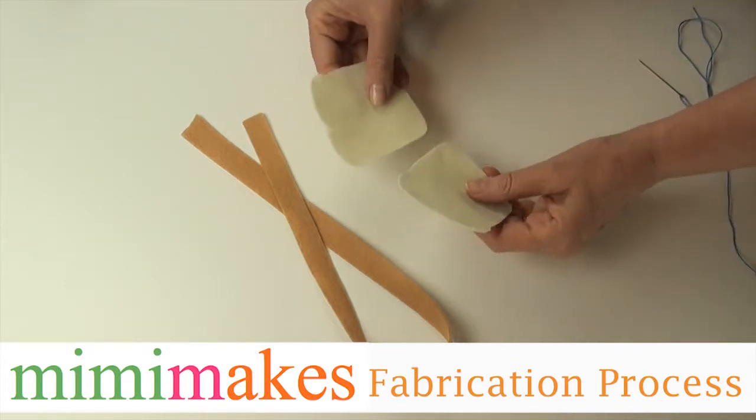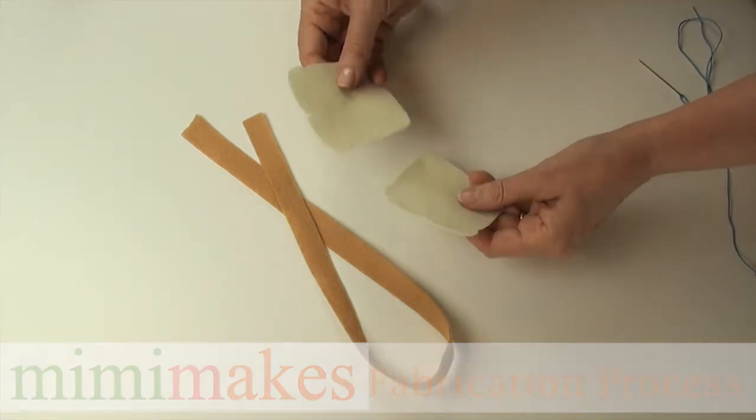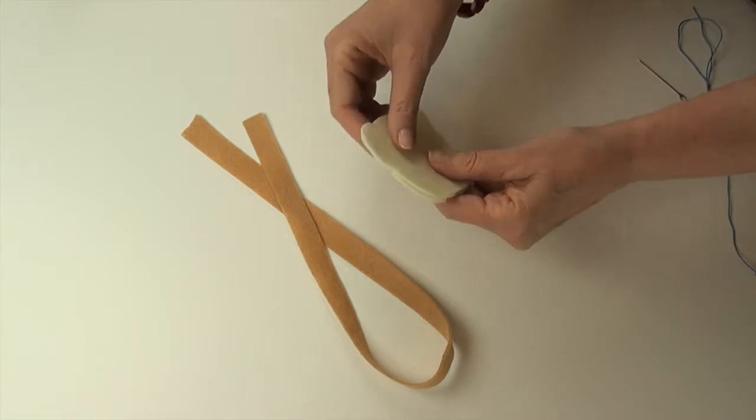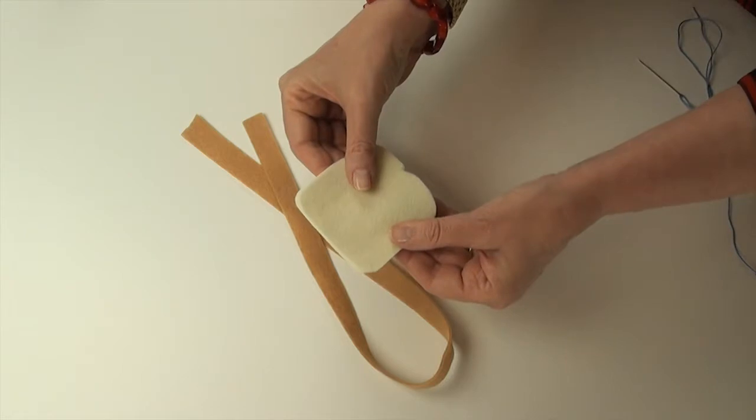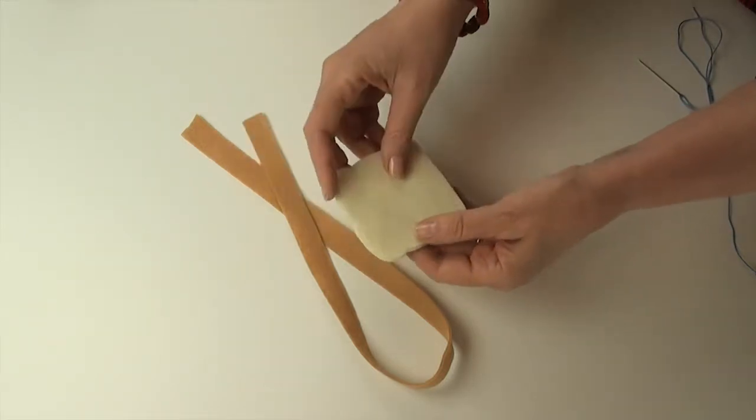After you've cut out your Mimi Makes pattern pieces they'll look like this. Take the two lighter colored pieces and see if they need to be trimmed. You want them to match as closely as possible. This could be trimmed a little but I think it's good enough.